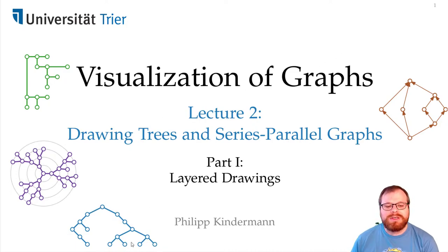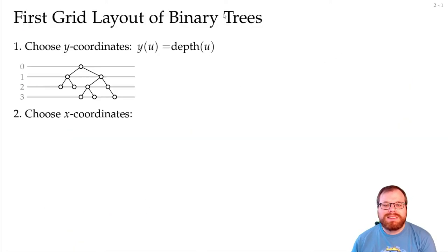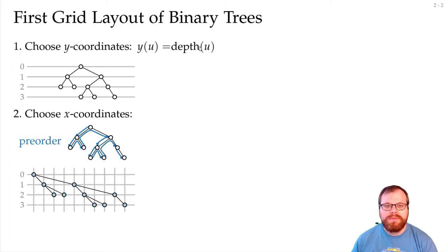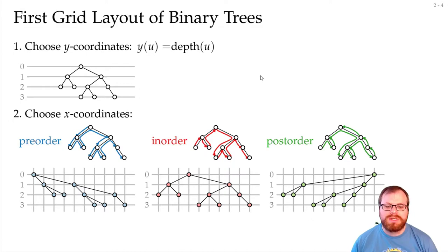We will start with layered drawings of trees, because in the last lecture we already found our very first one. We had a very simple algorithm: we choose the y-coordinates as the depth, and the x-coordinates as one of three traversals: pre-order, in-order, and post-order.